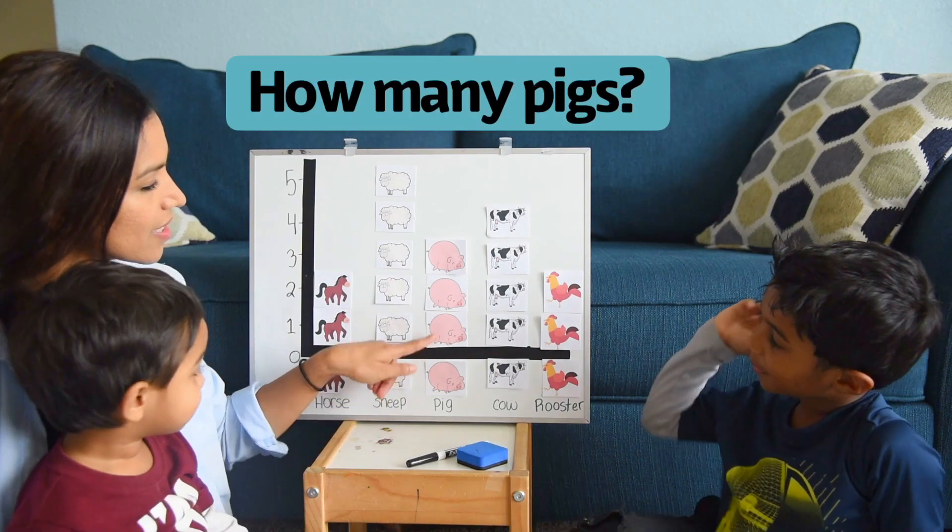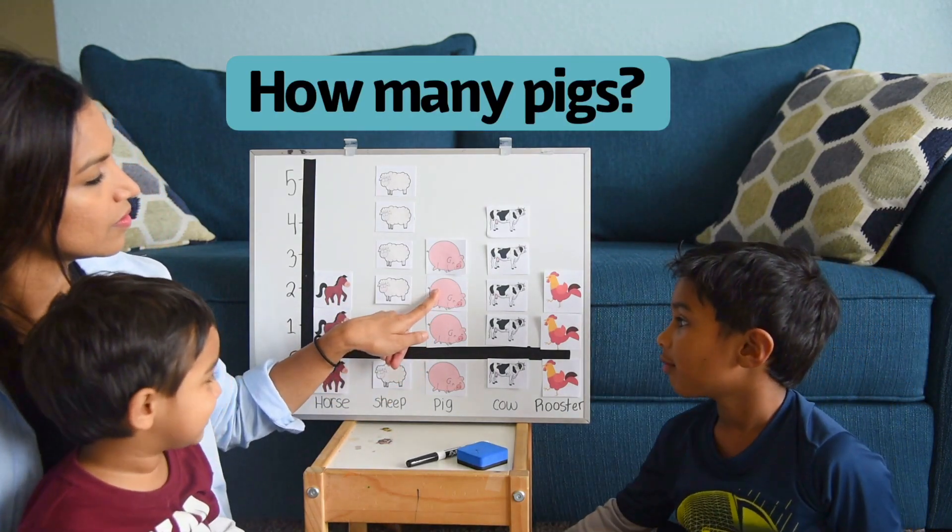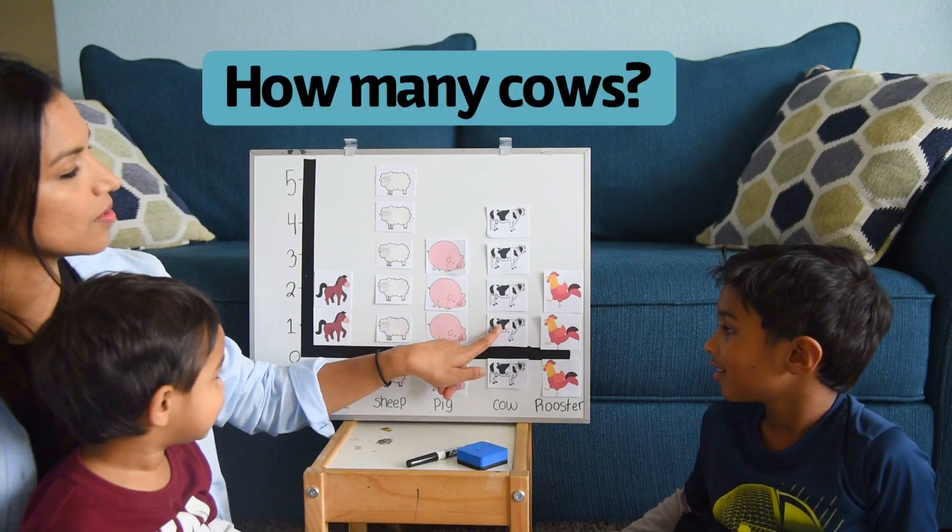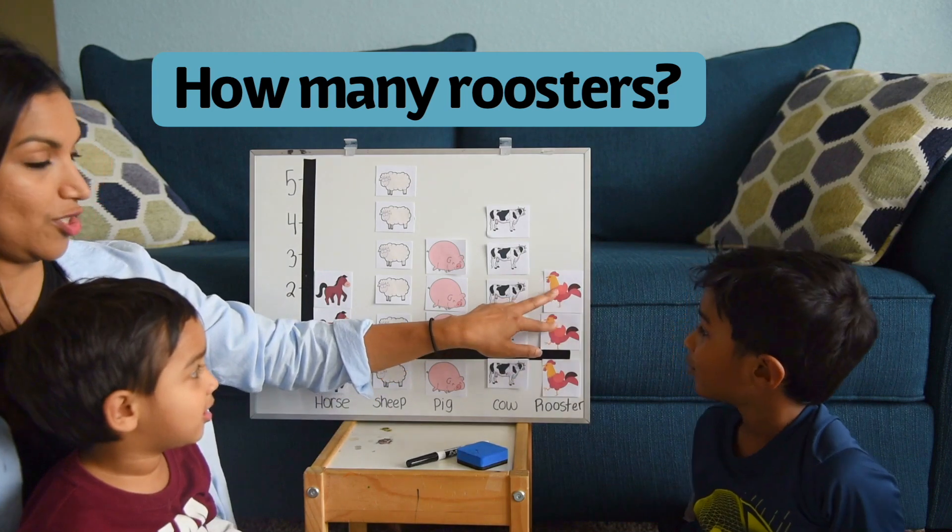How many pigs? One, two, four. Count again. One, two, three. How many cows? One, two, three, four. How many roosters? Two. One, two.